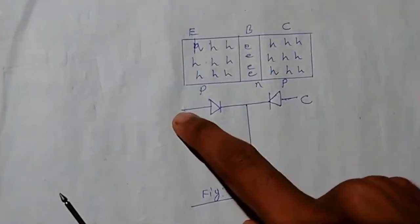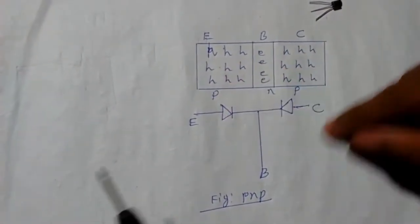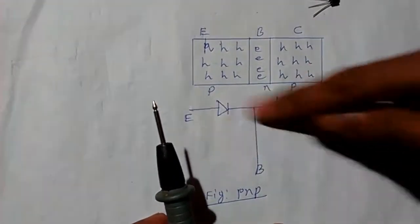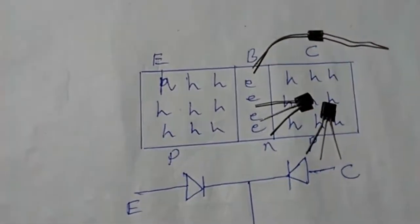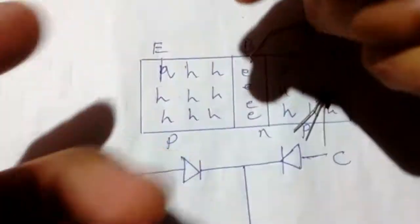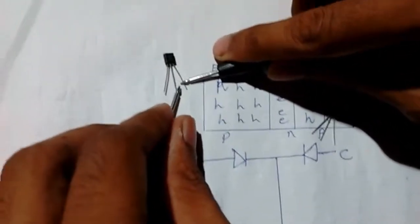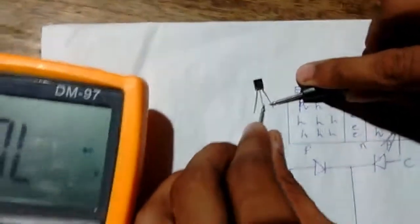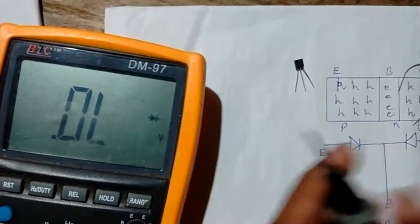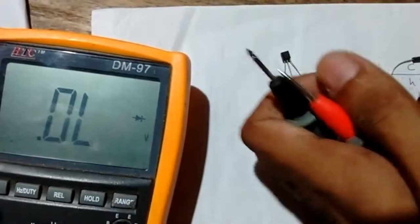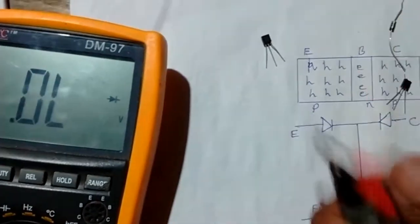For a PNP transistor, this side is positive, this is negative, and this side is positive again — that's the internal configuration. Using this method, you can identify any transistor as NPN or PNP. If there is no voltage drop, reverse the probes. If there is still no voltage drop, then the transistor is not good. If a voltage drop is present, the transistor is in working condition. Thank you.